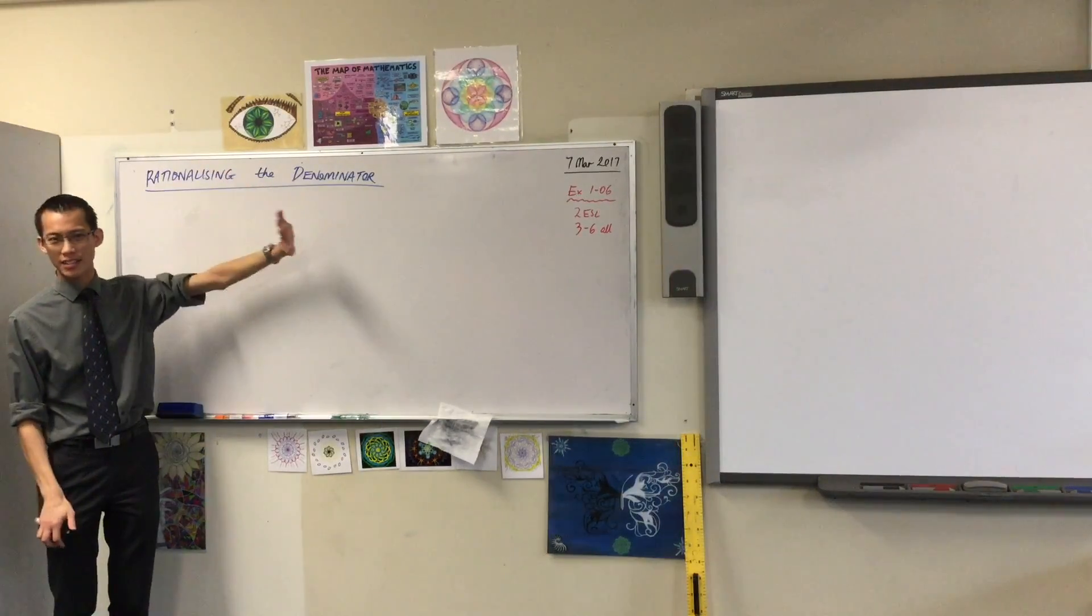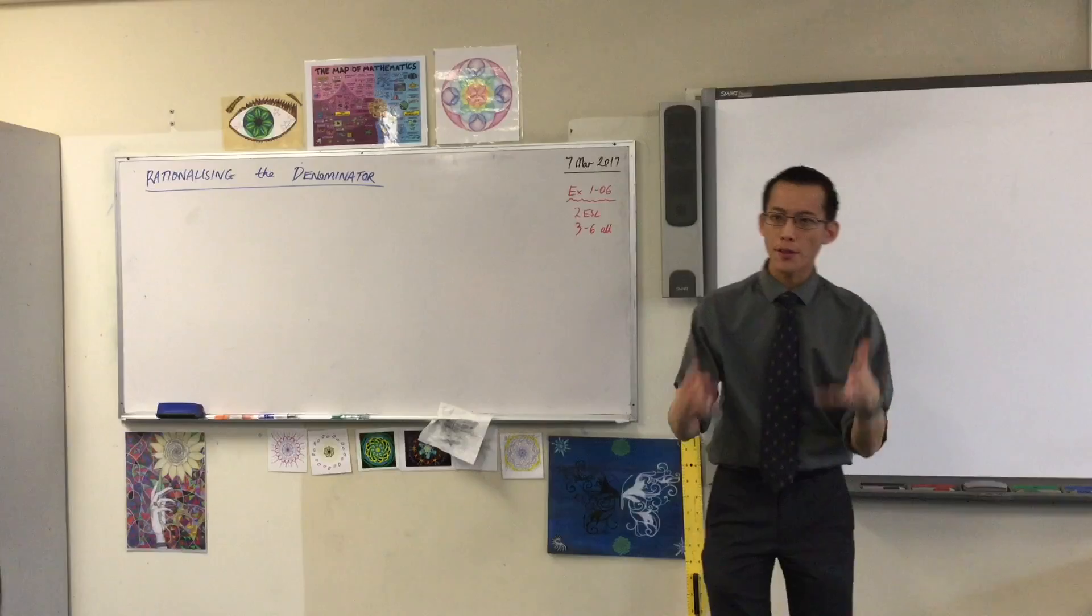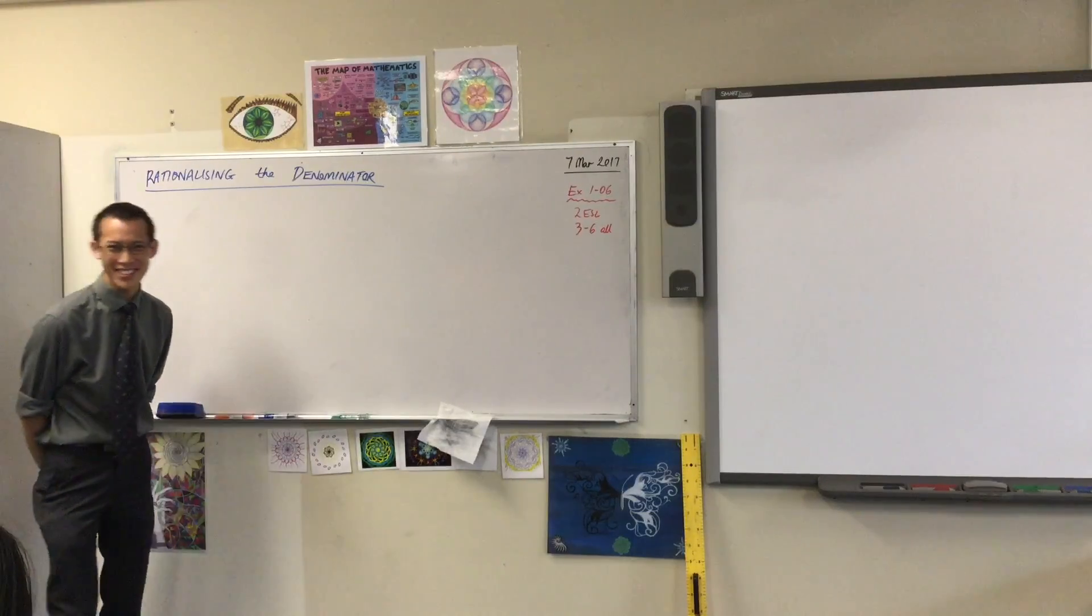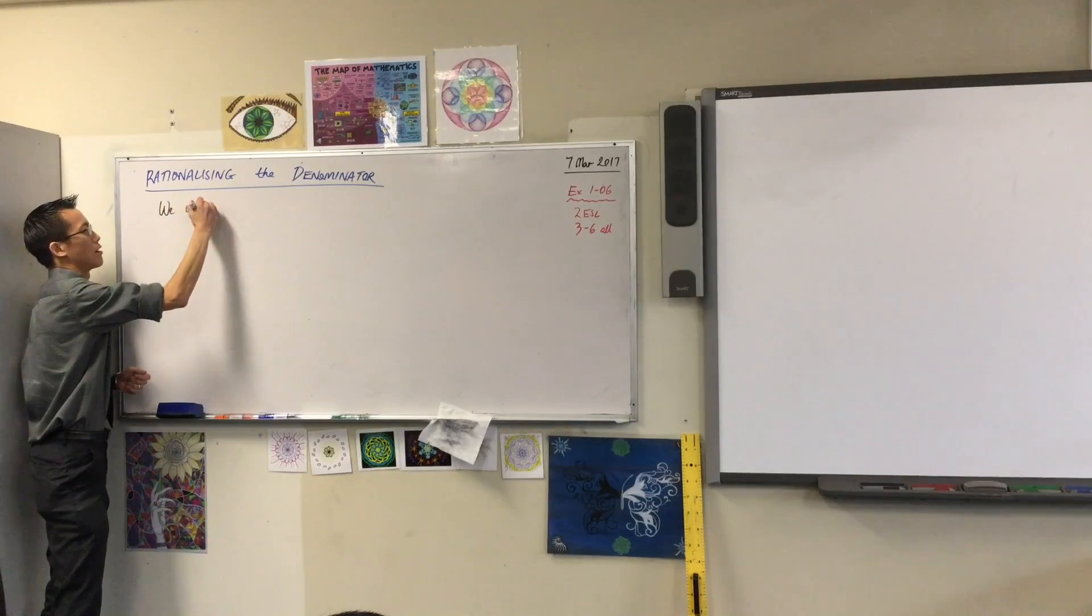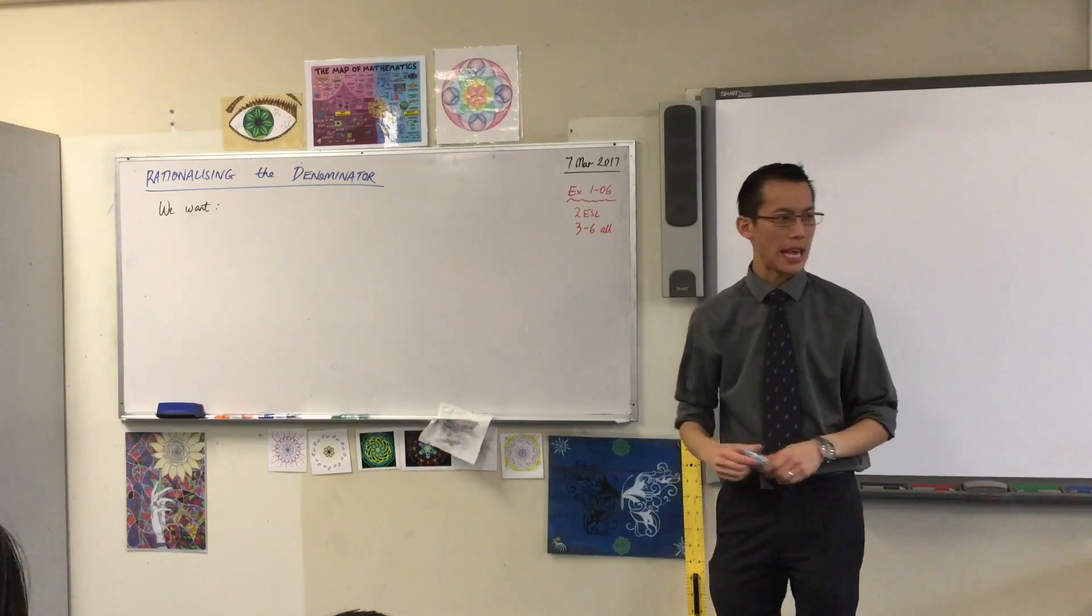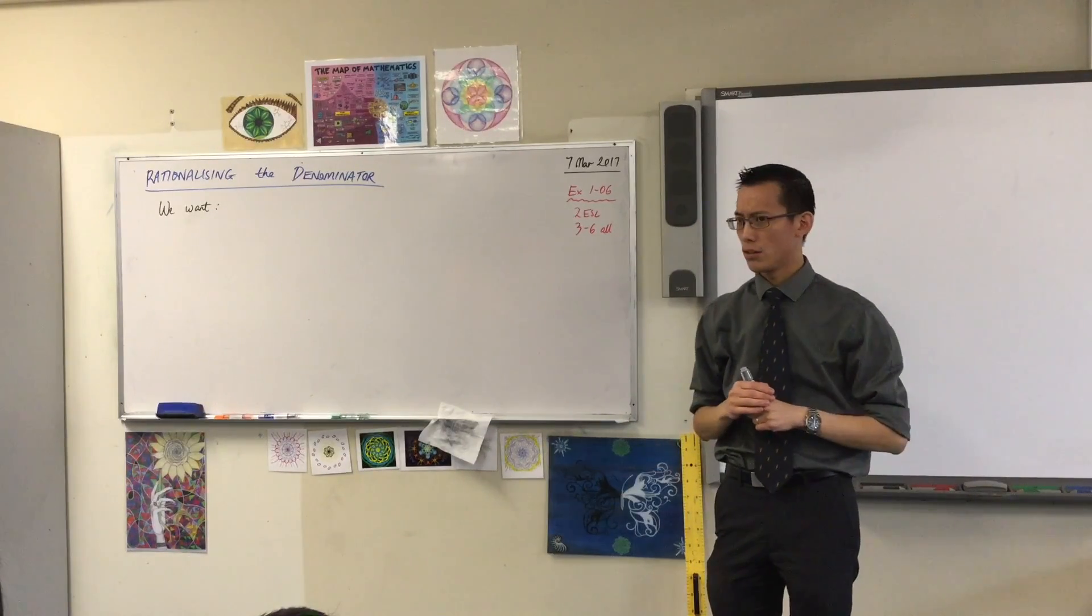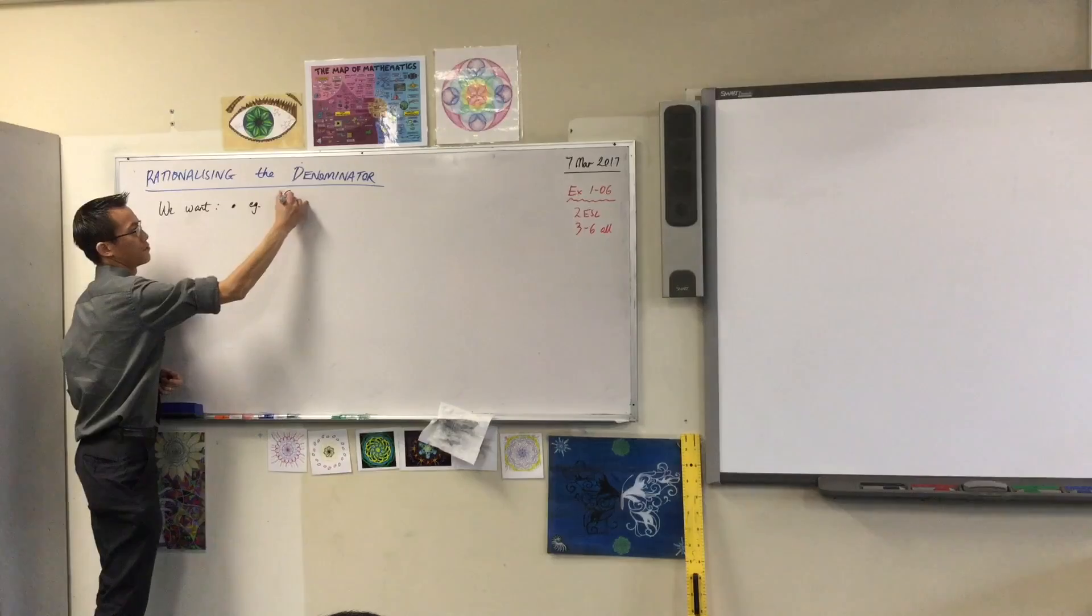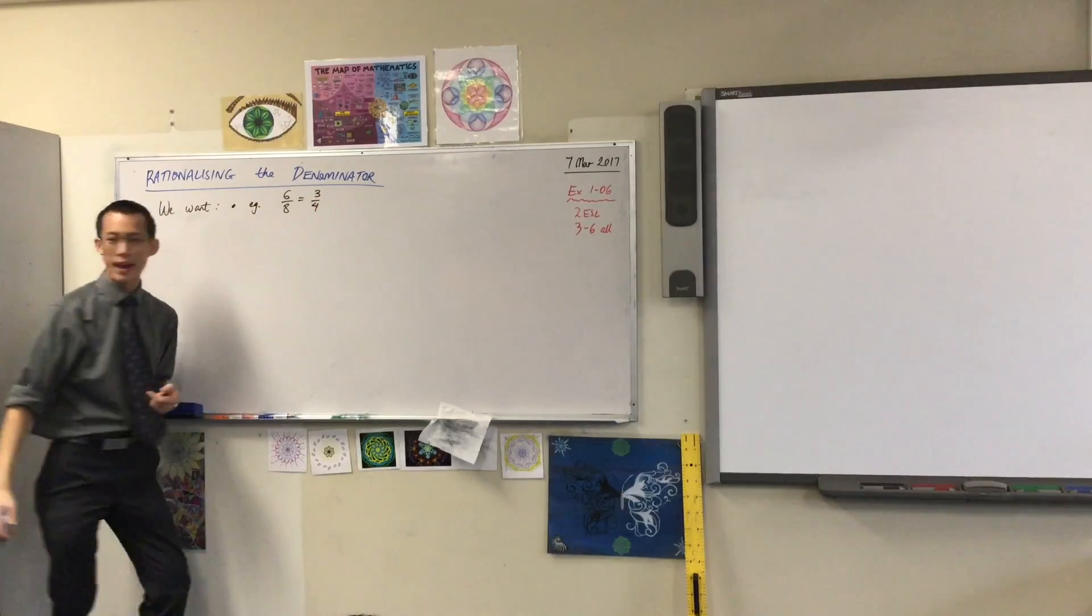The heading is rationalizing the denominator, that's what it's called. I just want you to think for a moment about all of the fractions that you've ever had to deal with. When you work with fractions and you look at the denominators of those fractions, we want a couple of things. If I gave you a fraction like 6 over 8, most of you would instinctively say I can write that simpler. How can you write 6 over 8 in a simpler way? You could go 3 over 4, right? Because both of them are divisible by 2. So you divide them both by 2, and that gives you an equivalent fraction.